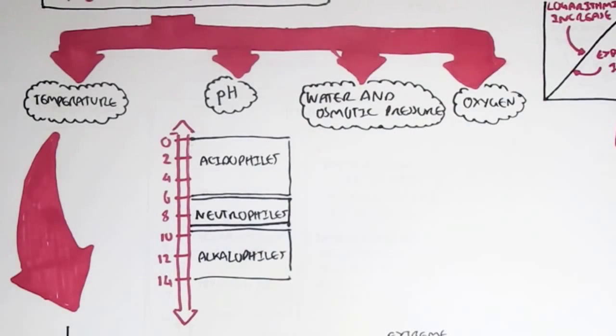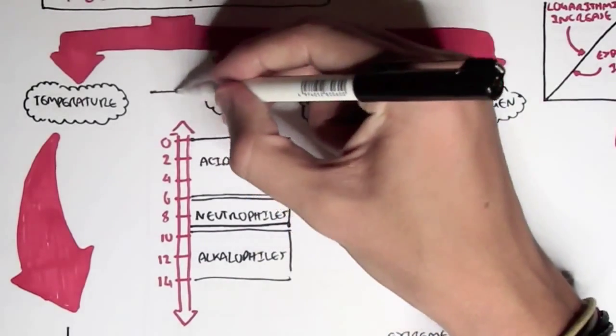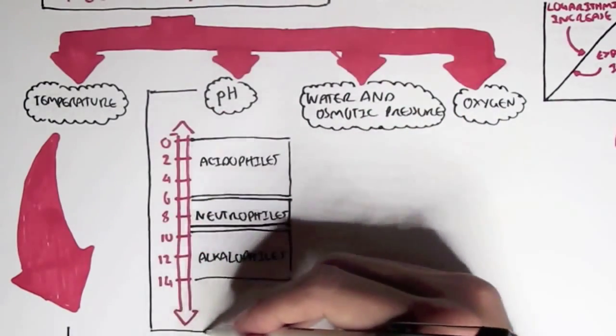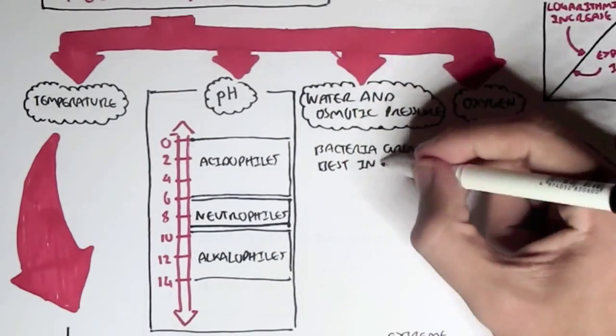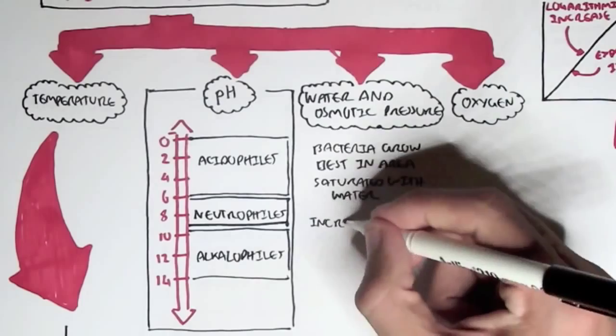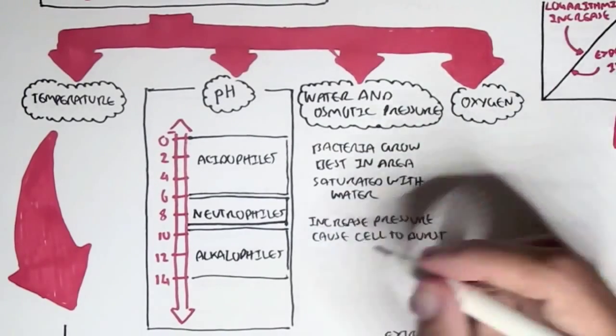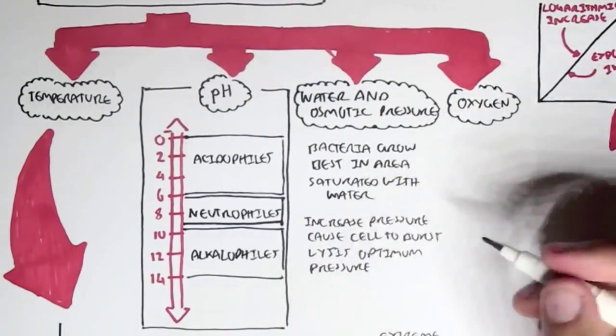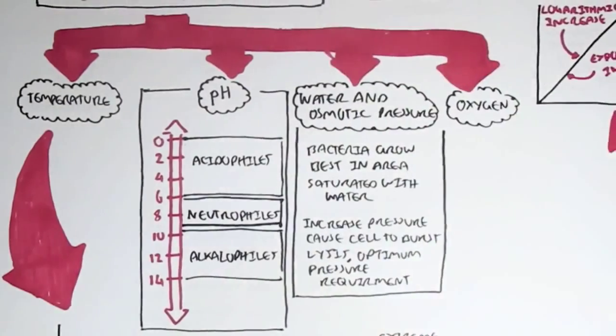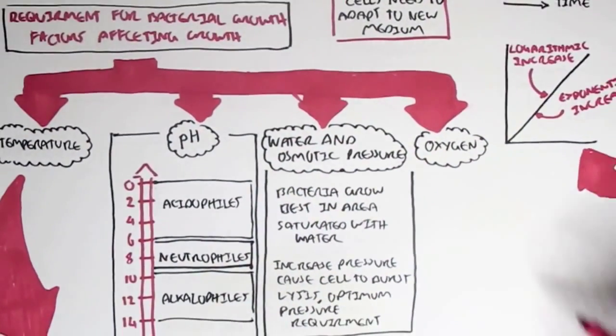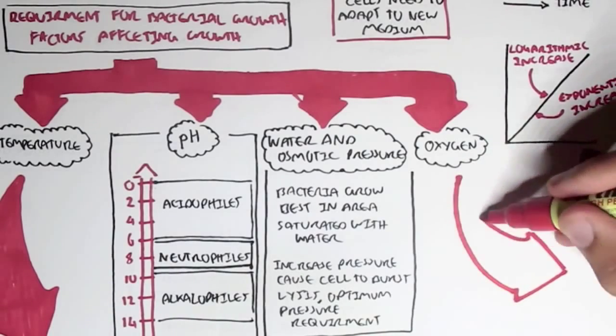Another factor which affects the growth of a bacteria is the water and osmotic pressure. Bacteria grow best in areas saturated with water. The increase in pressure in a bacteria or a cell causes the cell to burst as well, and so an optimum pressure is required.